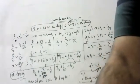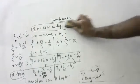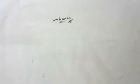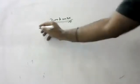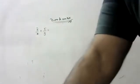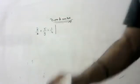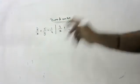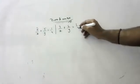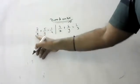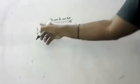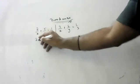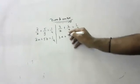One more sum — now with men and women. Two women and five men can complete a piece of work in 4 days, so together they complete 1/4 per day. Three women and six men can complete the same work in 3 days, so together they complete 1/3 per day. Let one woman complete the work in x days (doing 1/x per day) and one man in y days (doing 1/y per day). Let a = 1/x and b = 1/y.